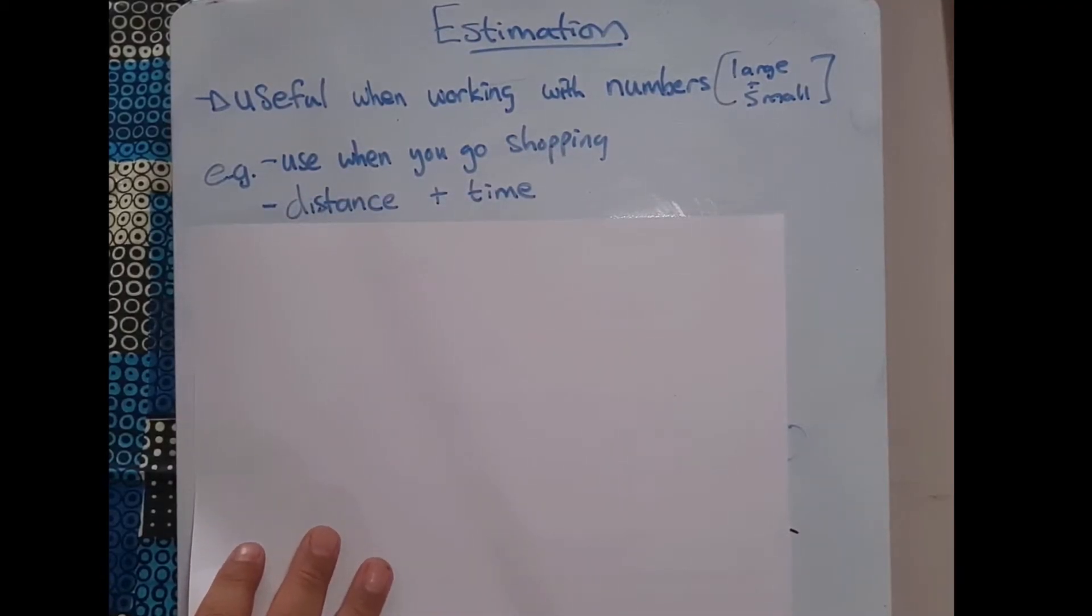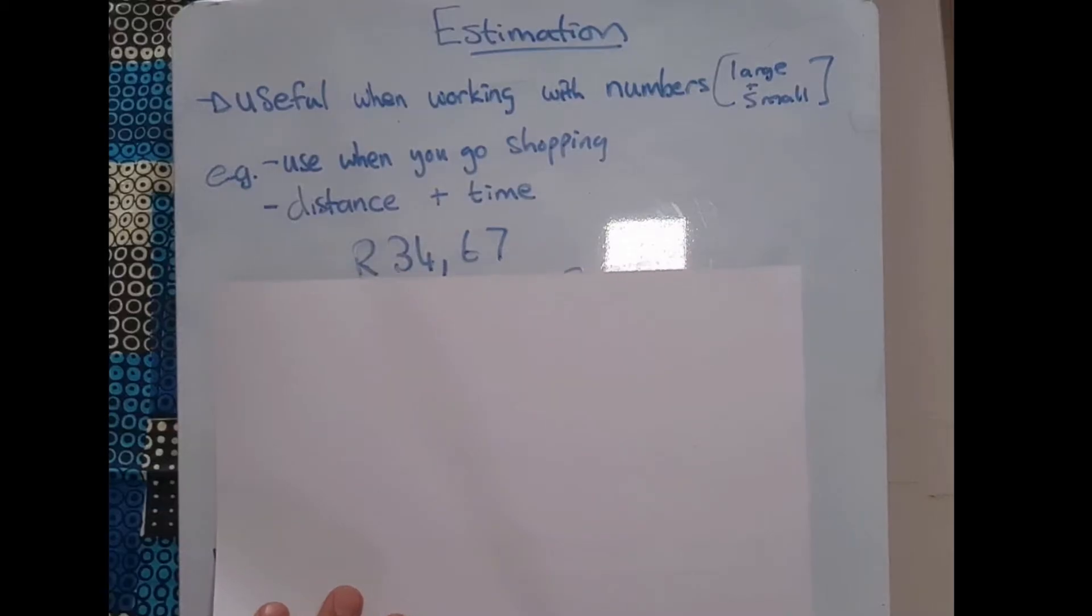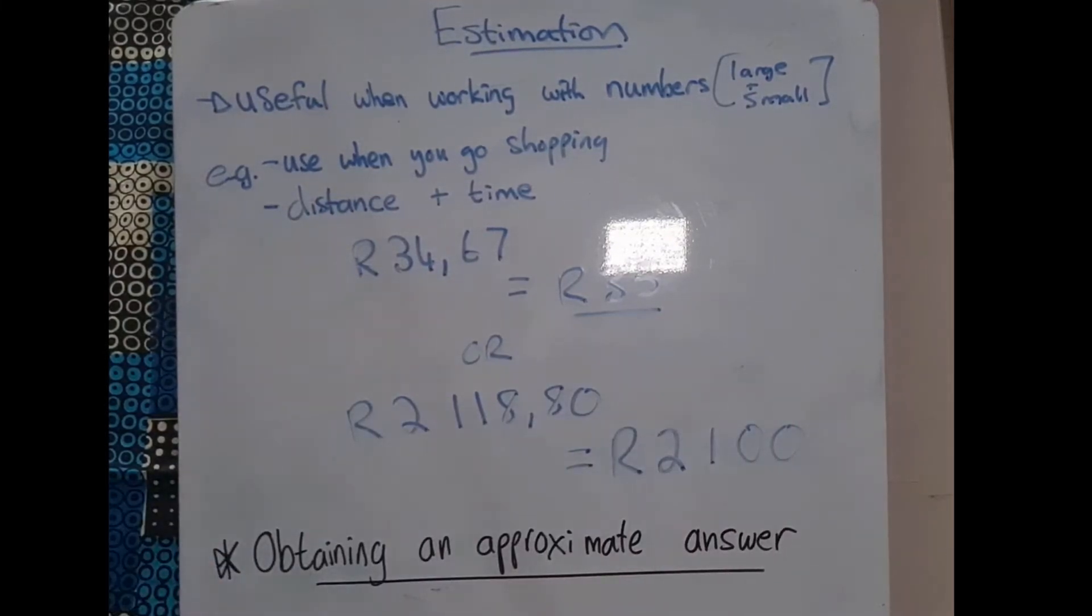So here's a typical example. If I've got R34.67 and I want to just quickly estimate how much am I going to spend, we don't really want to worry about those decimals. We would express this as an estimate saying well, it's R34.67, so it's around about R35. Or we could look at the number like R2118.80, and in our minds we would just estimate it around R2100.